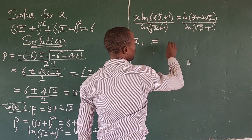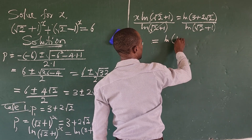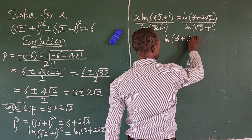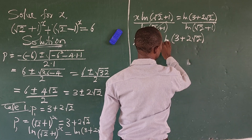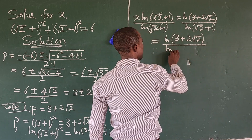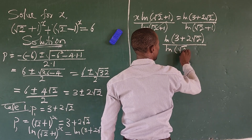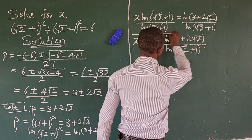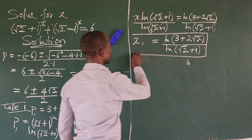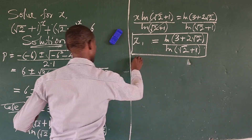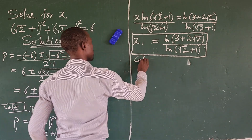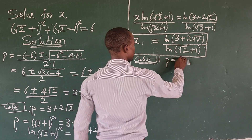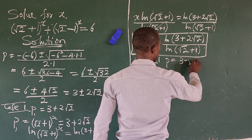Dividing both sides by ln(√2 + 1), we get x₁ = ln(3 + 2√2) / ln(√2 + 1).